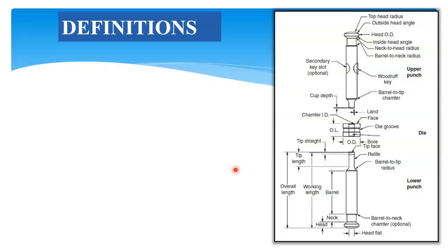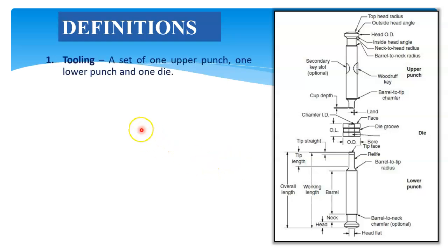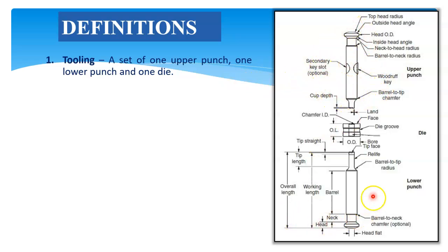Now there are different definitions regarding tooling. First, what is meant by tooling? Tooling is a set of one upper punch, one lower punch, and one die. This is upper punch, this is lower punch, and one die. The set of upper punch, lower punch, and die is called tooling.